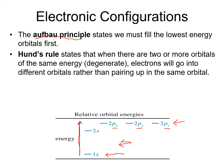Hund's rule says that when there are 2 or more orbitals of the same energy, the degenerate orbitals, electrons will go into different orbitals rather than pairing up in the same orbital. That means that you would add your first electron here, and then you would add your second electron here, and then you would add your third electron here, and then you would add your fourth electron here. You would not just double up in 2px before spreading them out into y and z.